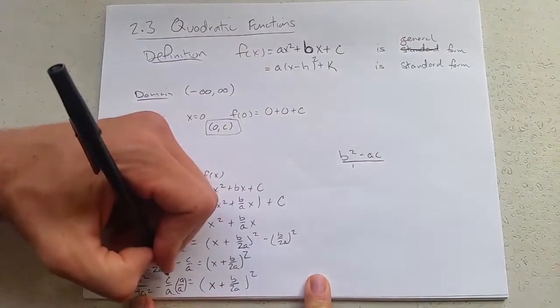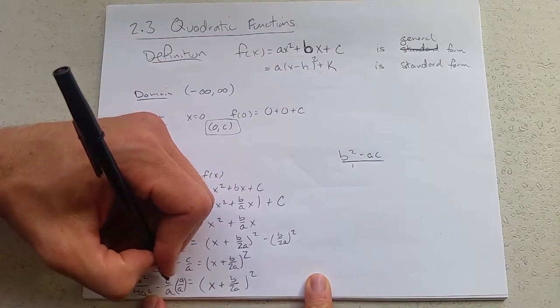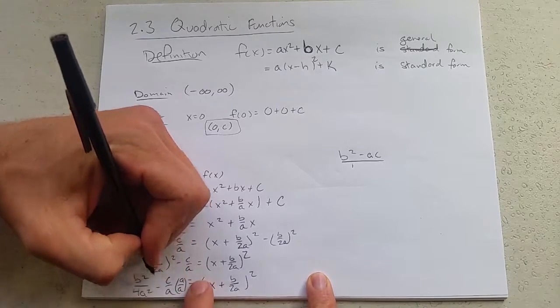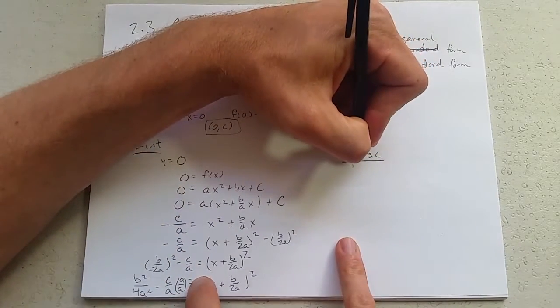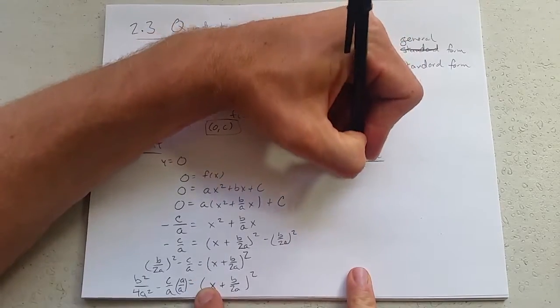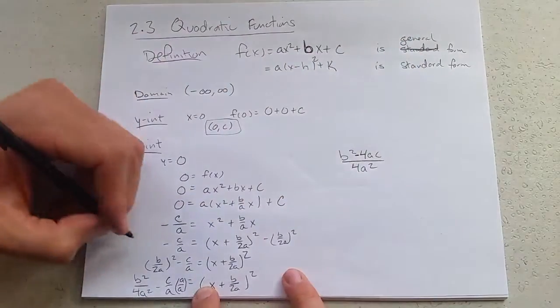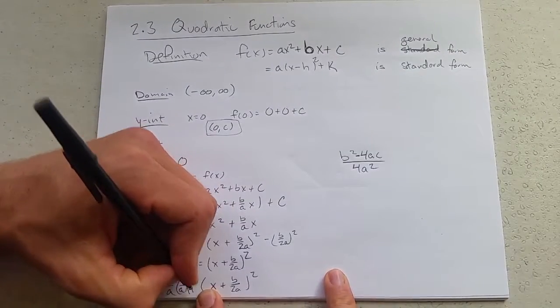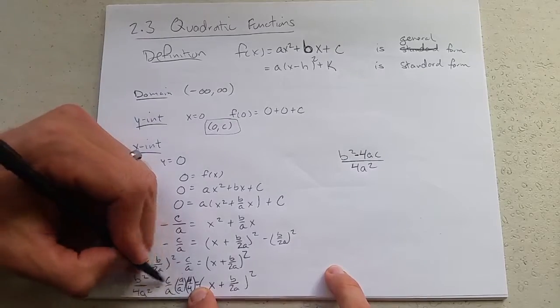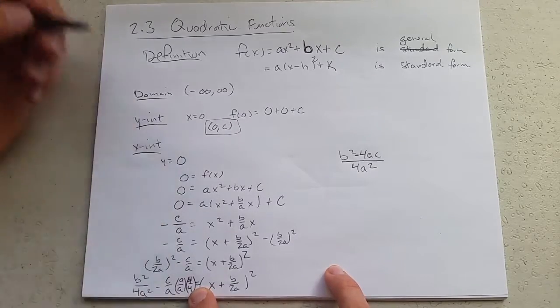We also have a 4, so we're going to need another 4 over 4 right here. So we could slip in another 4 over 4 and just move our equal sign over, so we get 4ac over 4a squared right here.